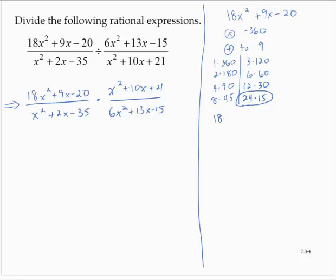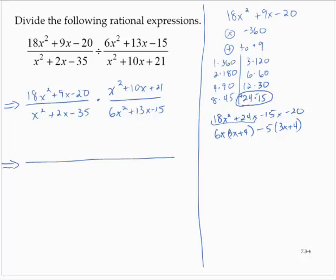So I'd have 18x². Let's see. I need a positive 9 here, so I need a positive 24 and a negative 15. Plus 24x minus 15x minus 20. So that's 6x times 3x plus 4, minus 5 times 3x plus 4. So we would have for the first one, 3x plus 4 times 6x minus 5.